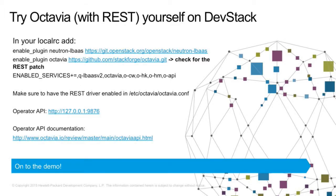You can try the REST driver yourself. There's a REST patch — find it and put it in. The plugin will install it automatically in DevStack. Enable the Octavia plugin, which pulls the REST patch; it has scripts to generate certificates and place them. Check that your REST driver got enabled. There's also an operator API you can go to directly, or use the Octavia plugin. And there's API documentation available.